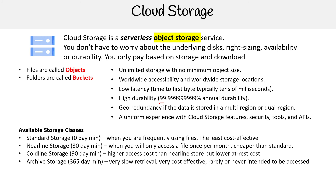You have Archive storage — this actually has no SLA; availability is zero SLA because it's essentially offline. So very slow retrieval, but very cost effective. It's rarely or never intended to be accessed. You'd use these to store things like reports or accounting information that you have an obligation to store for seven years. Notice there's a number here that shows zero, 30, 90, 365.